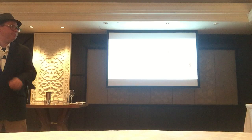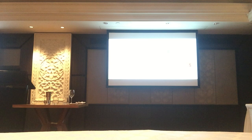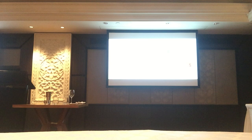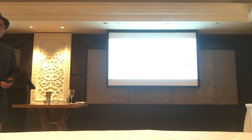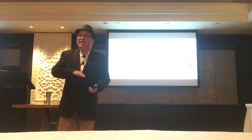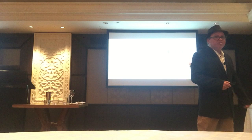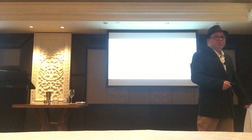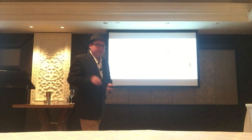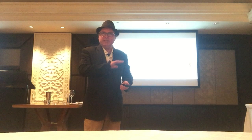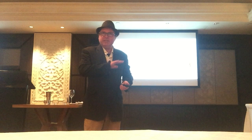Bourbon is obviously a style of whisky that comes from the Americas. It can be distilled to a maximum of 80%. It has to be made in new oak barrels — you can't reuse the barrels; always a brand new charred oak barrel. It has to be made with a minimum of 51% corn — in reality most use more than 51%, but it can't have less. To be a Kentucky straight bourbon, it has to be aged for a minimum of two years. But if it's under four years, it has to have the ageing period listed on the bottle.